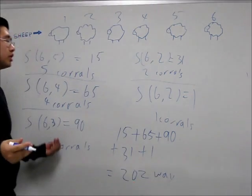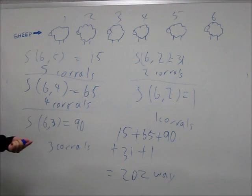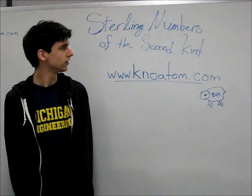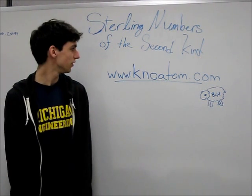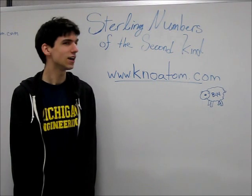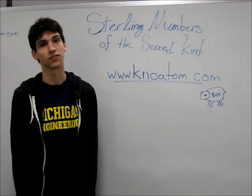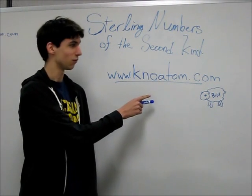And that is a reasonable, applicable example of putting sheep in the corrals, and also an example of how to use Stirling numbers in everyday life. This concludes our presentation on Stirling numbers of the second kind. And remember, go to www.knoatom.com for all your discrete mathematics needs.